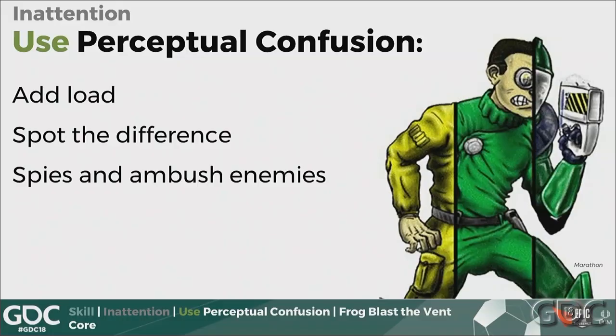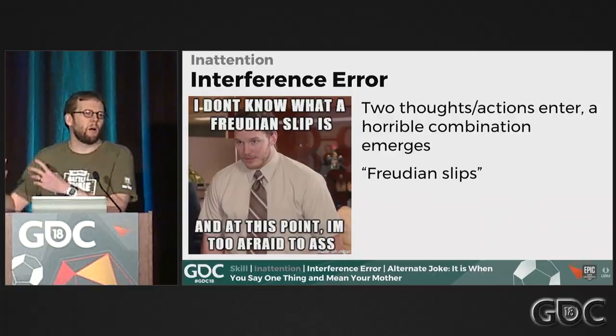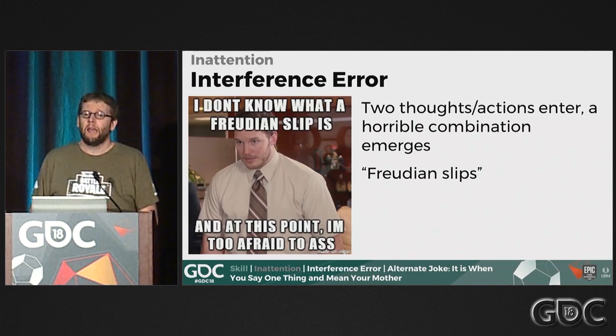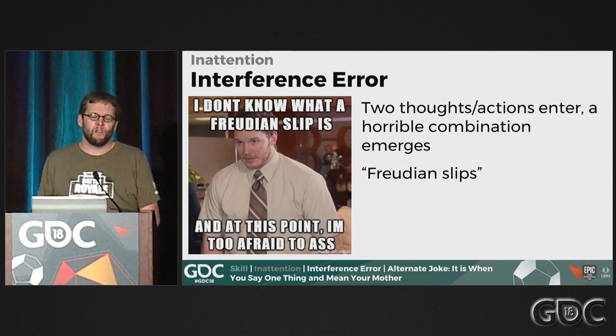Our next error is interference error — this is where two thoughts and actions enter, and a mixed-up combination emerges. For example, when my uncle at a wedding wanted to welcome and thank people, he stood up and said 'I would like to wank.' These are often called Freudian slips, but they aren't about wanting to sleep with your parents — they're just part of how cognition works. If you have several things that could be possible, they sometimes combine.